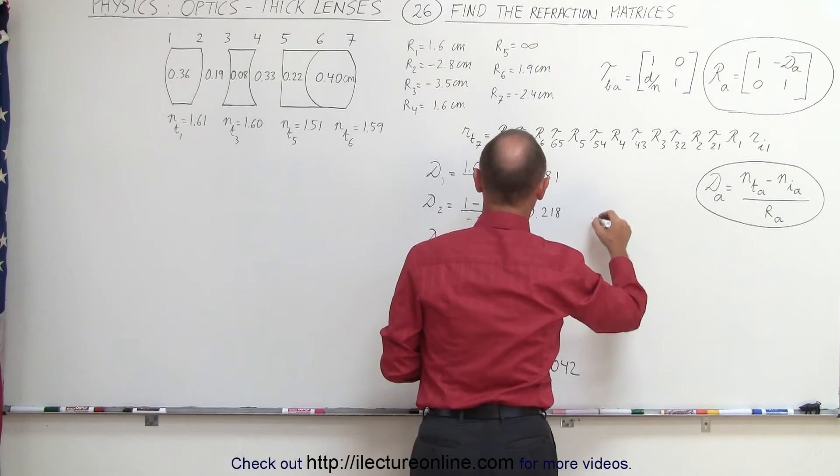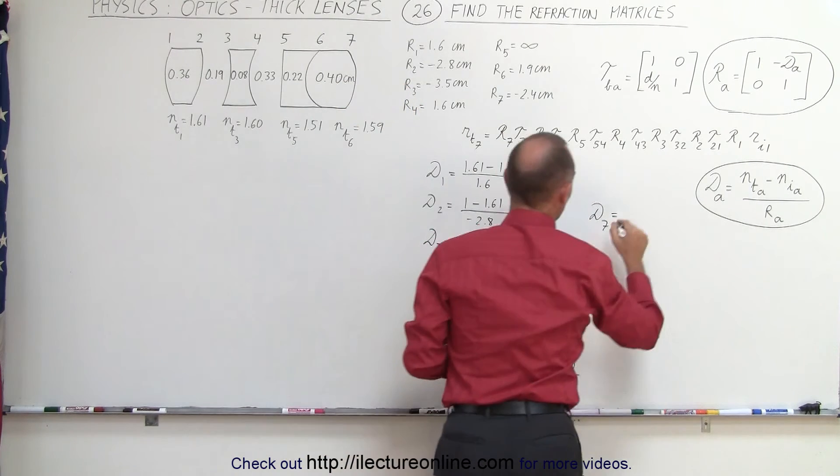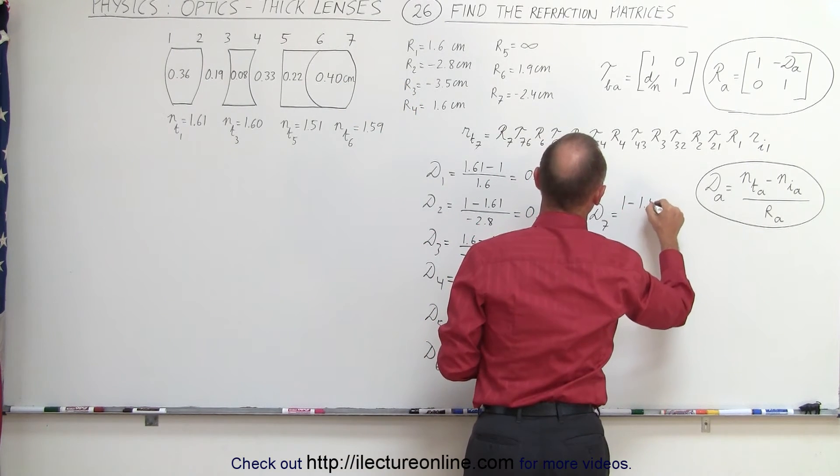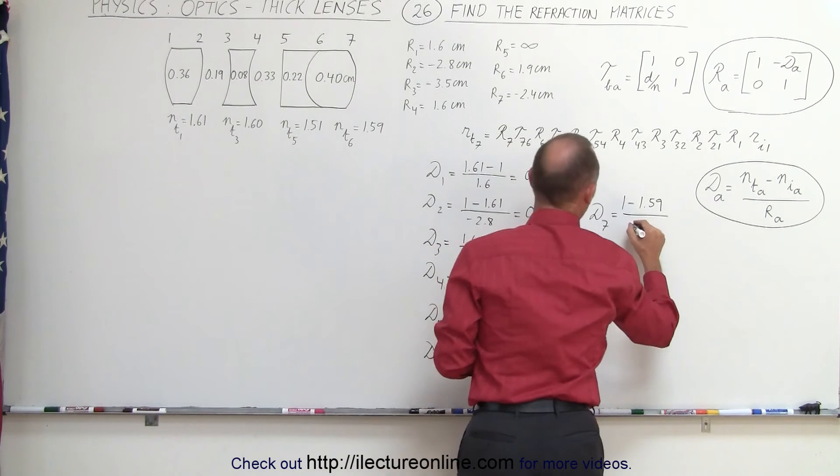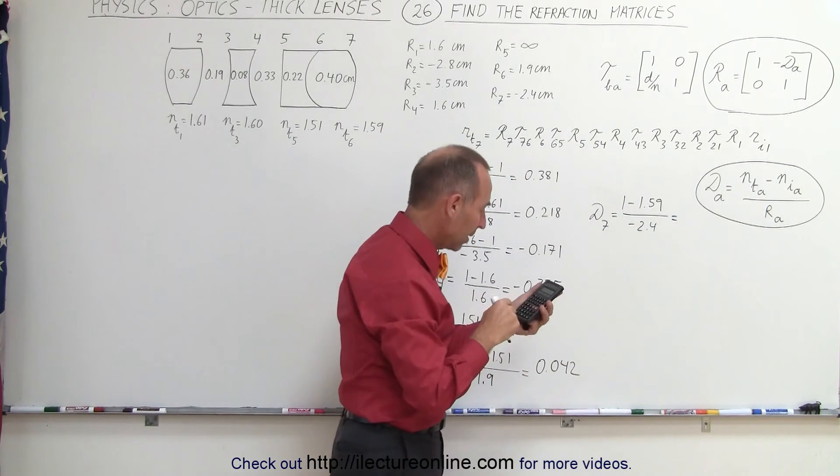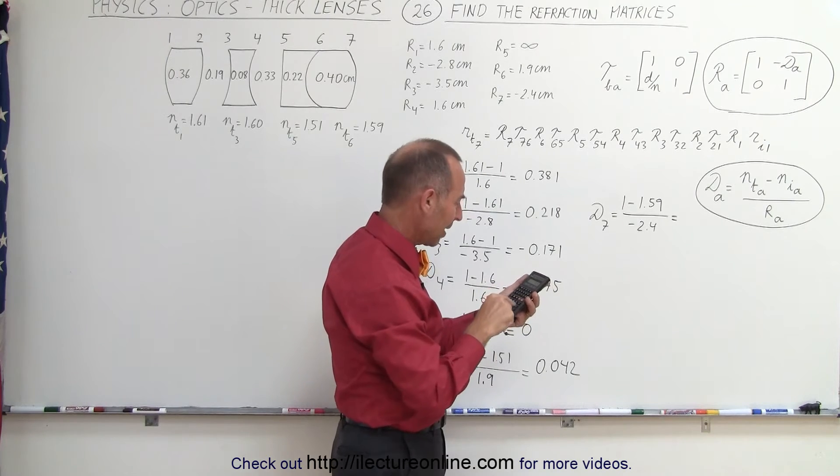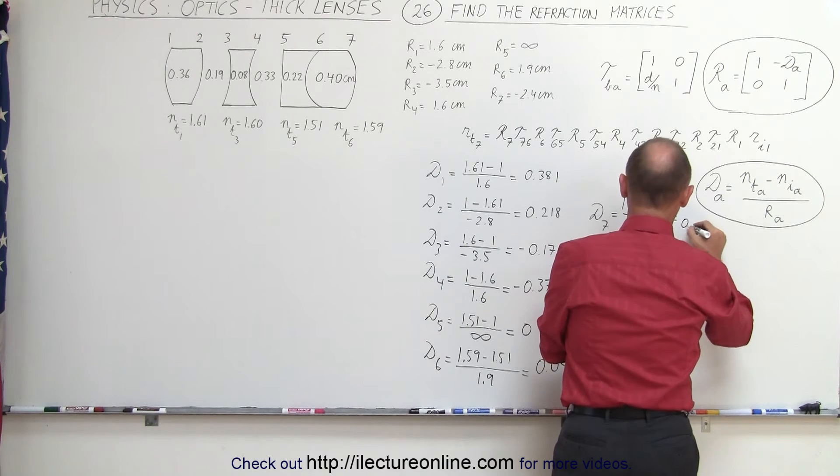And one more, d7. So that would be air minus this index of refraction, 1 minus 1.59 divided by the radius of curvature, minus 2.4. So that would be 0.59 divided by 2.4, that's also minus. So we end up with a positive 0.246.